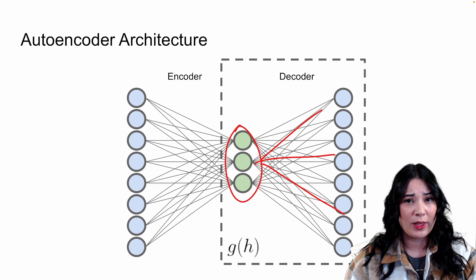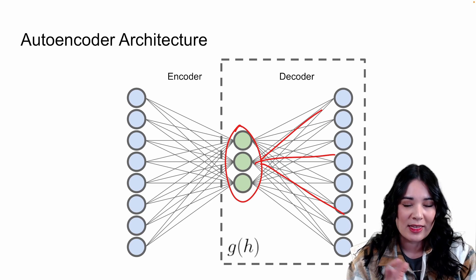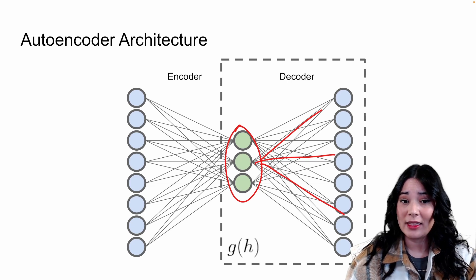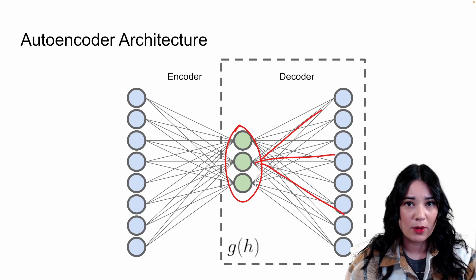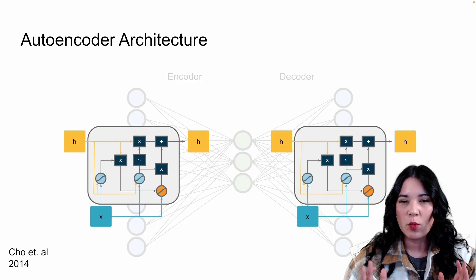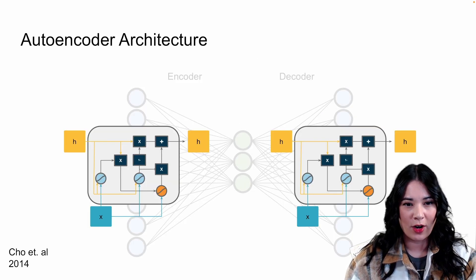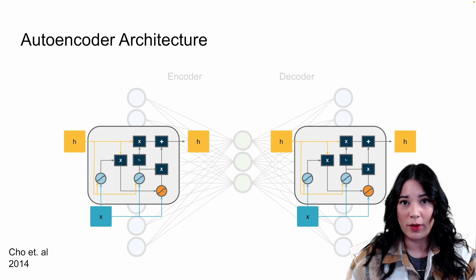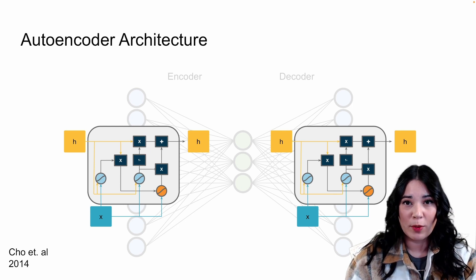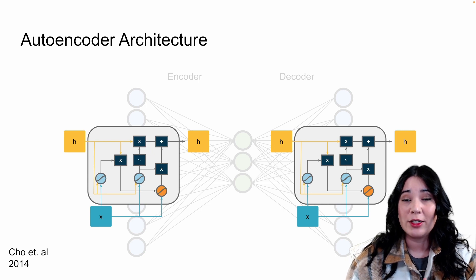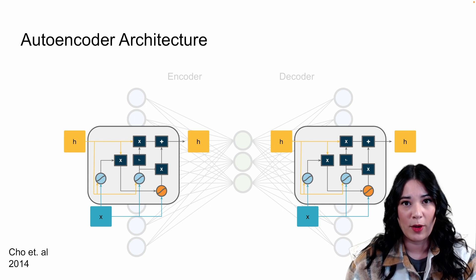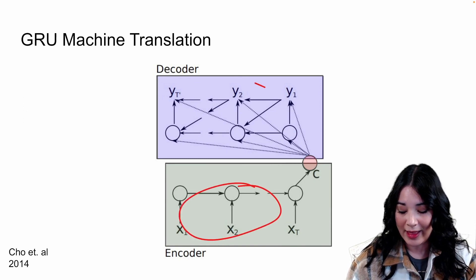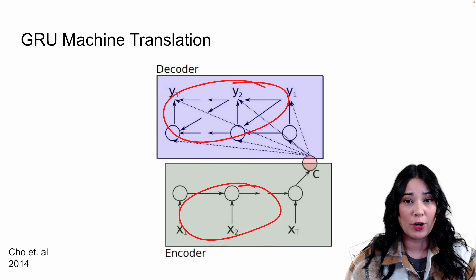The autoencoders we looked at, even though they were fancy and non-linear, were still using just feed-forward, densely-connected layers, or at most maybe some convolutional layers. But what if we had an autoencoder architecture whose encoder and decoder were recurrent neural networks? This is exactly what was proposed by Cho et al. in 2014, when the GRU was proposed.